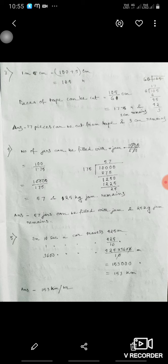Number of jars can be filled with jam is equal to 100 upon 1.75, that is 10,000 upon 175. When you will divide, you will get 57. So 57 jars can be filled and how much is remaining? 0.25 kilogram jam will remain.